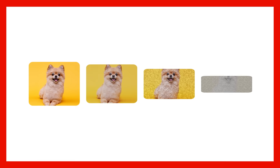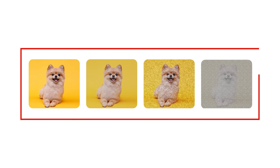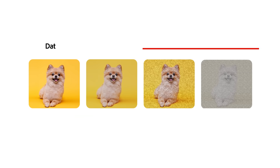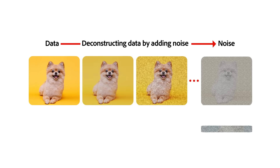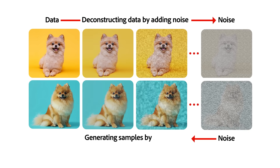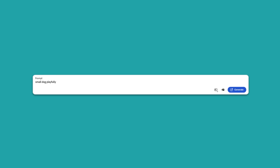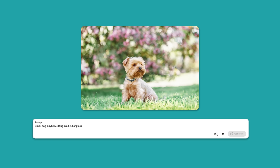One common training method is called a diffusion model. Put very simply, training images are turned into what looks like super pixelated noise. The image is gradually diffused until it's unrecognizable. Then, when you enter a prompt, that process runs in reverse. The model builds a new image back from the noise based on what you described, which is why detail is so key to obtaining better generated content. So when you type something like "small dog playfully sitting in a field of grass," the model isn't pulling from a database of existing dog photos. It's generating a new image from noise based on what it's learned from tag training data.